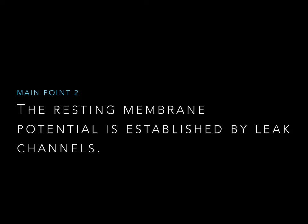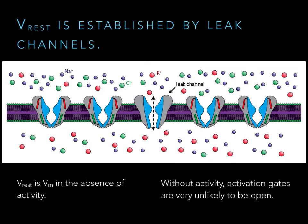The resting membrane potential is determined by all of the passive ion conductances — mostly the leak channels. Pumps are important for establishing the resting membrane potential, but the instantaneous membrane potential is based on which leak channels are present in the cell. All neurons have leak channels, though some have a different composition giving them different resting membrane potentials. When we're resting, activation gates on any gated ion channel remain closed, so the only open ion pores are leak channels, which vary from cell to cell.